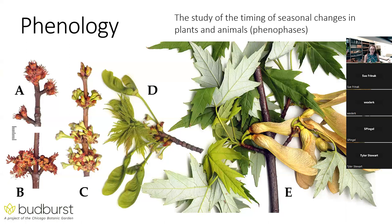Here's an example of phenophases in a silver maple. We ask people to look at various plant parts — flowers, leaves, and fruits. You'll answer questions for each plant part: what are the flowers doing, what are the fruits doing, what are the leaves doing? In April versus September, for instance — that's how we collect phenological data, and we'll talk more about that in a few minutes.